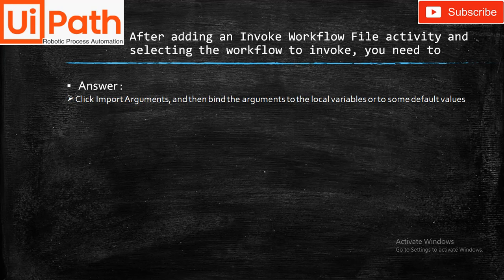After adding an Invoke Workflow File activity and selecting the workflow to invoke, we need to click Import Arguments and then bind the arguments to local variables or to some default values.